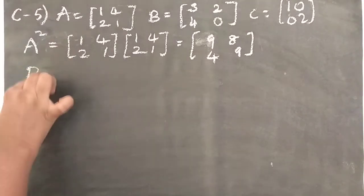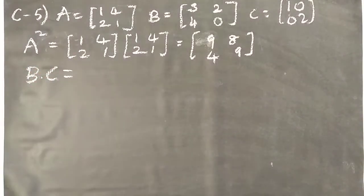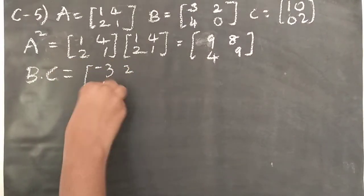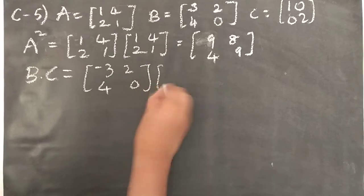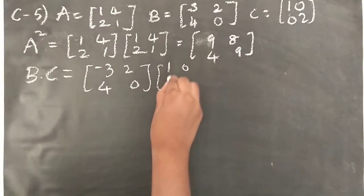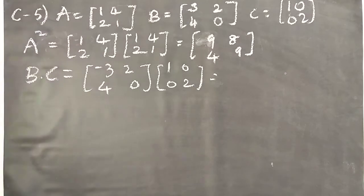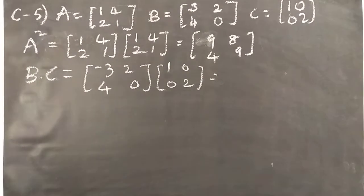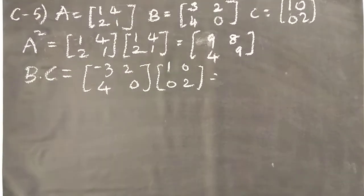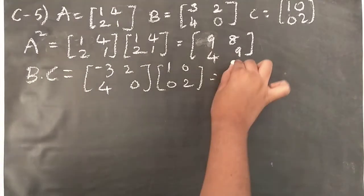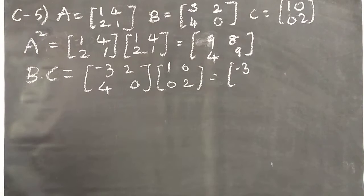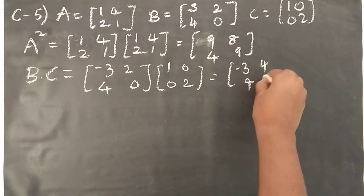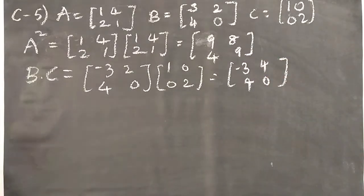Now B, C. B dot C, that means B into C. That is minus 3, 2, 4, 0 into 1, 0, 0, 2. So again and again I can't explain each and every question. So now directly I am writing the multiplication part. So B into C value is minus 3, 4, 4, 0. This is the value for it.